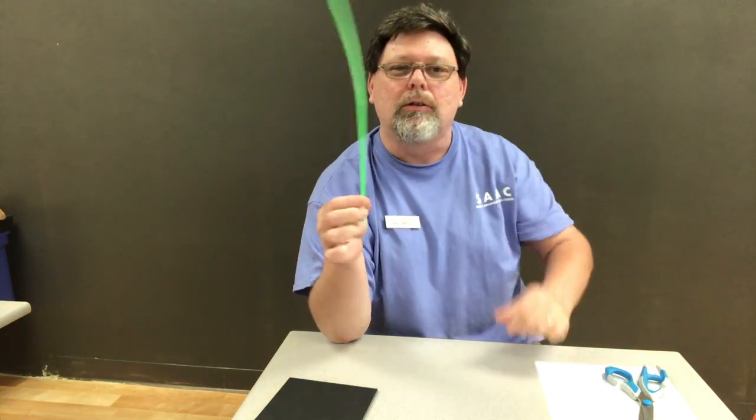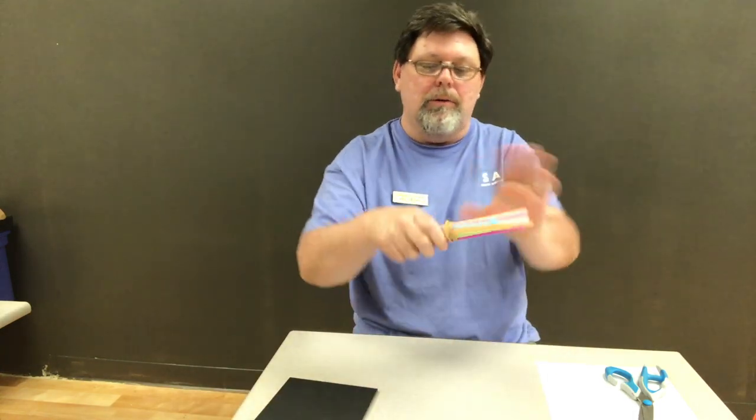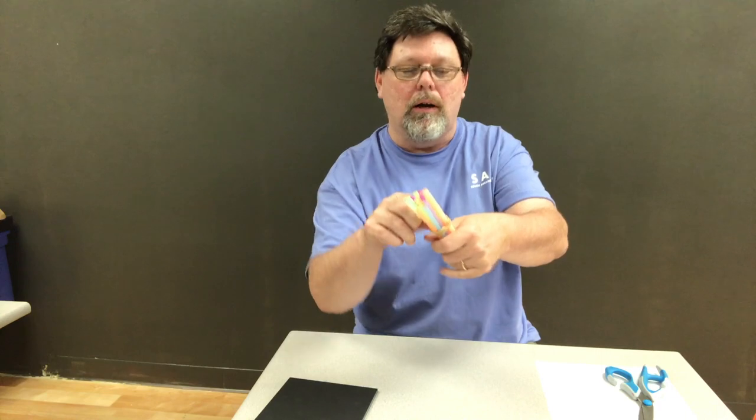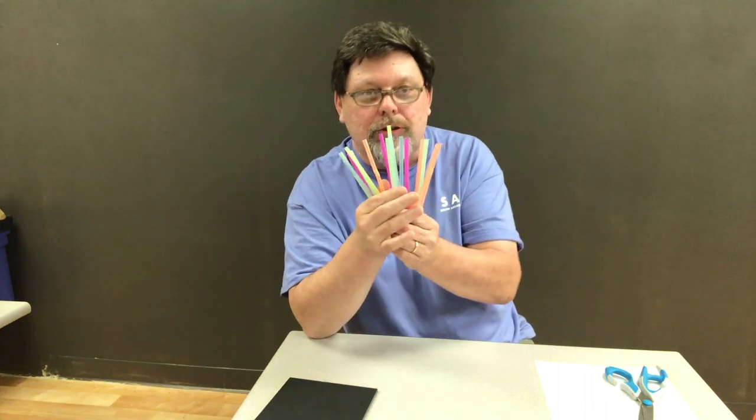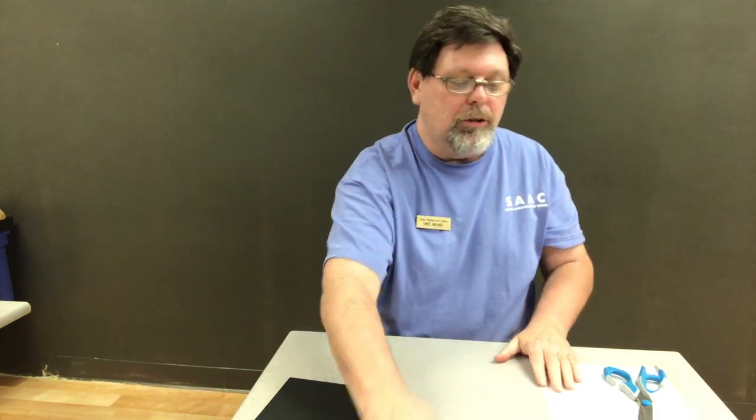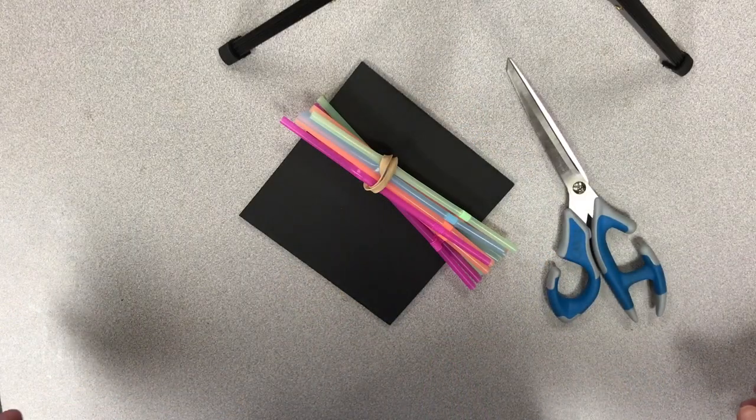If you have a bundle of straws with a rubber band, we need that rubber band for something else, so put that back in the bag. So you got your straws, you got your board, you got your glue, you got your scissors. Let's get going on the first 3D abstract art project for this camp.